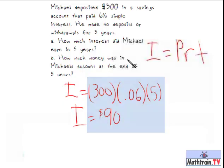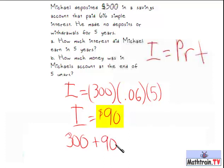Now, that just answers A, how much interest did Michael earn in 5 years. Well, that's not the total amount of money in the account, so we have to add 300 plus $90, which is the interest, equals 390, which answers question B.